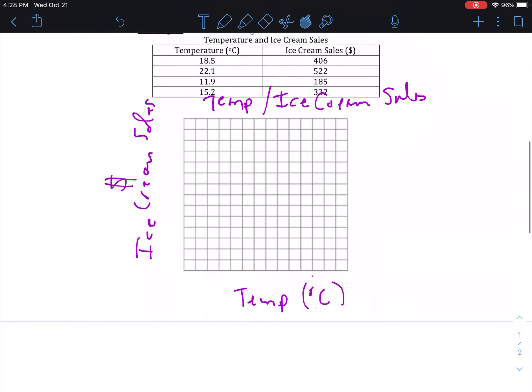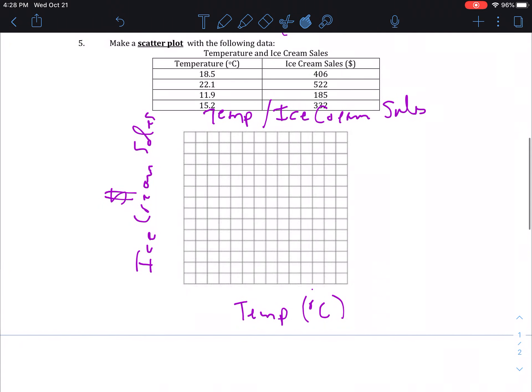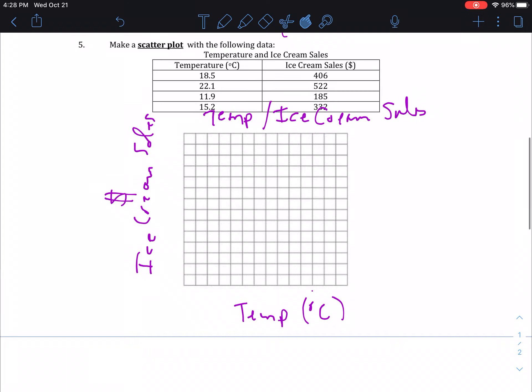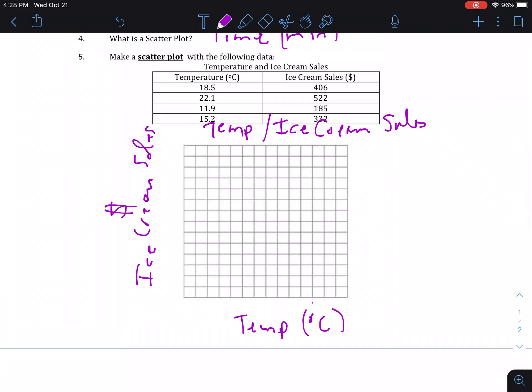The next graph that we have is a scatter plot graph and the title is temperature and ice cream sales. What is the relationship between the temperature, the outside temperature, and ice cream sales? We have temperature in degrees Celsius on the bottom and ice cream sales in dollars on the side. Again for temperature on this side, our lowest temperature is 11.9, our highest temperature is 22.1, and we subtract those two and we get 10.2.